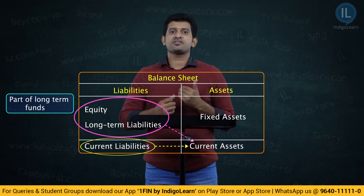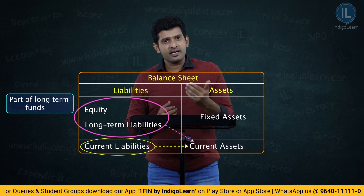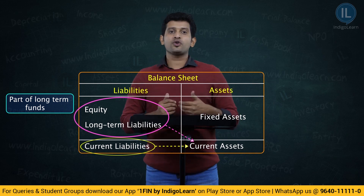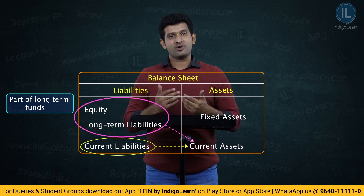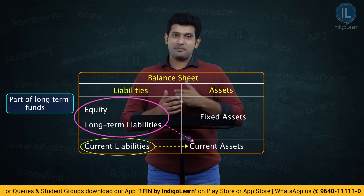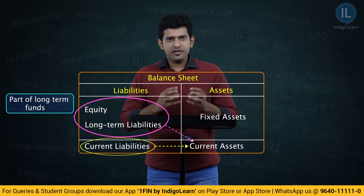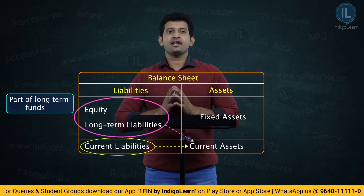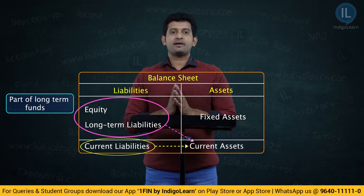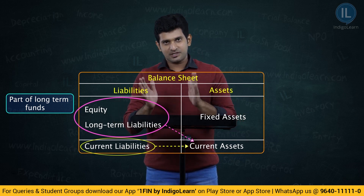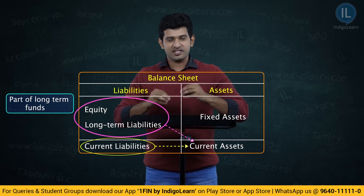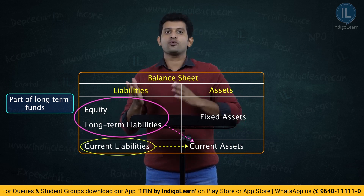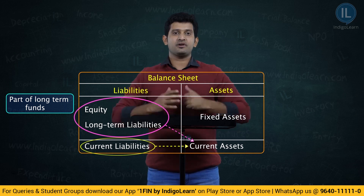Let us first understand what are current assets and what are current liabilities, and then move on to understanding the concept of working capital. Mathematically, working capital is current assets minus current liabilities.